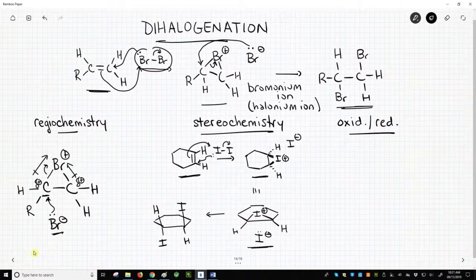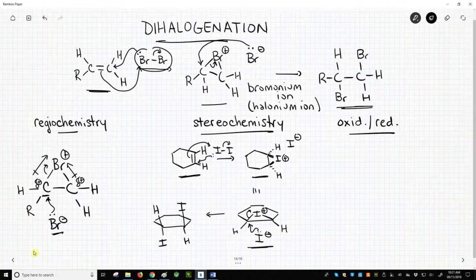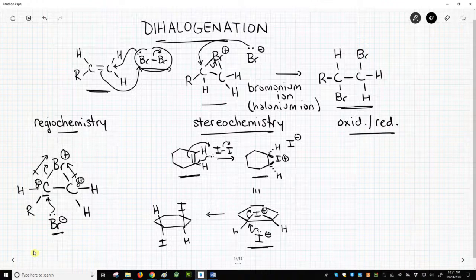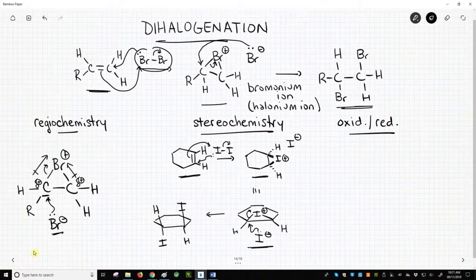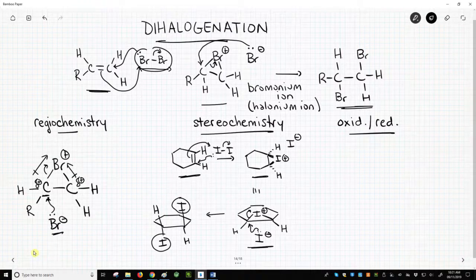The incoming nucleophile, iodide, attacks from the opposite face, the bottom face, to open the ring. This step resembles an SN2, so you get inversion. The end result gives one halogen up and one halogen down trans. That gives us the anti-product.